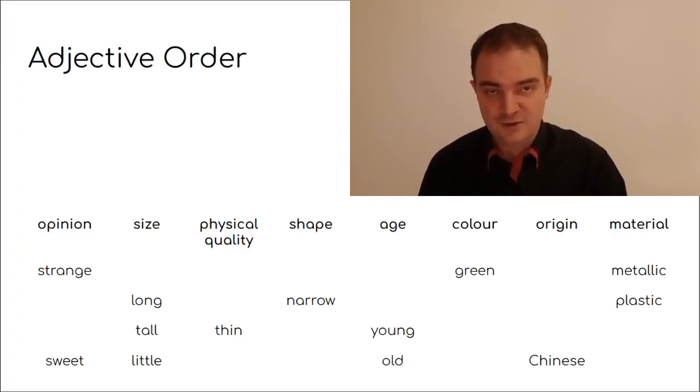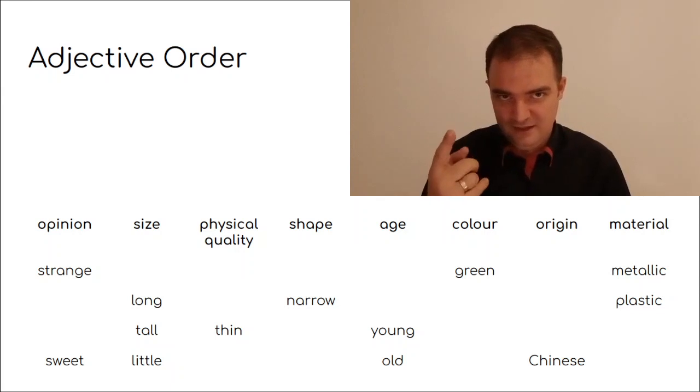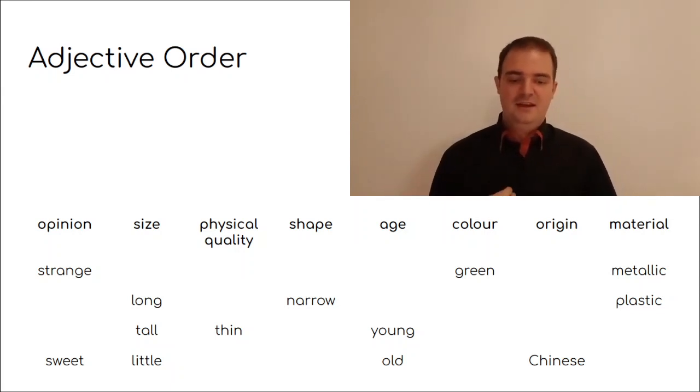And language is also implicit knowledge. Language is an implicit system. It's a subconscious system. And maybe the fastest way I could demonstrate to you that it's implicit and that it's subconscious for English is with adjective order.